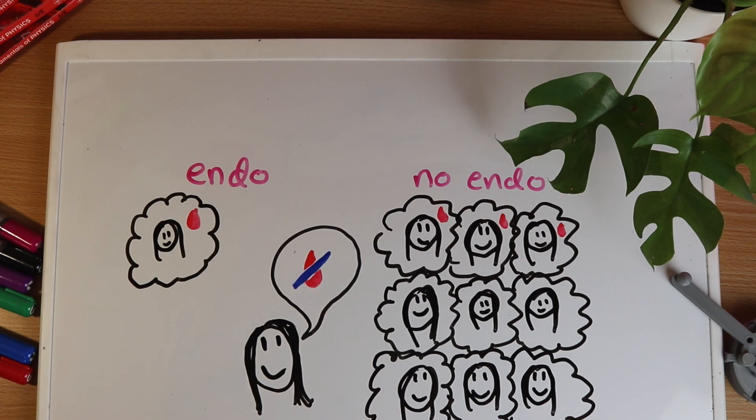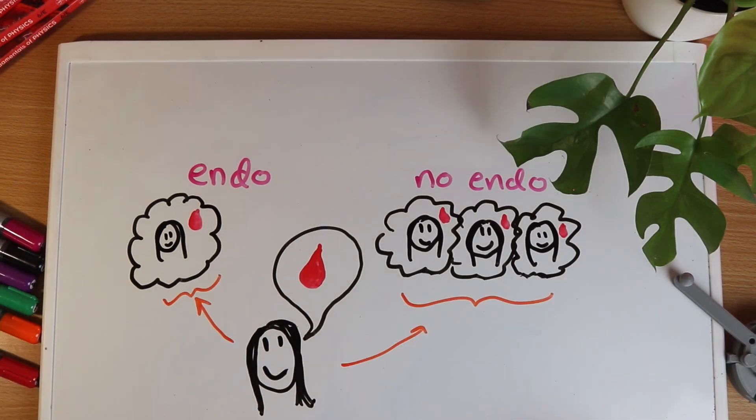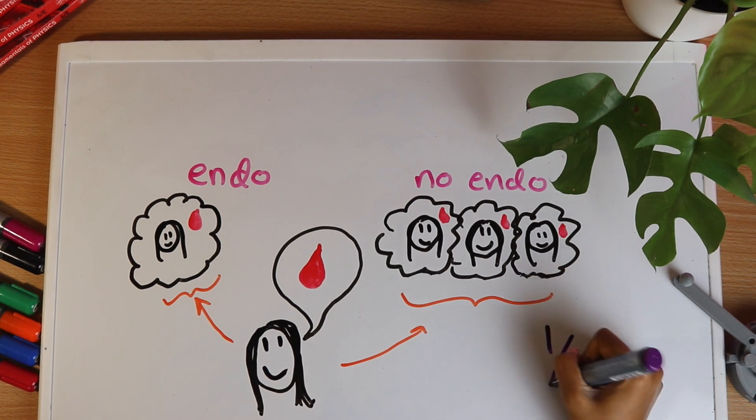If someone instead says that they do have this symptom then they must be one of these four people. So what's the chance that they have endo now? The chance is one out of four. So by knowing this one symptom we were able to increase a person's chance of having endo from one in ten to one in four. Remember this is probably an underestimate because I overestimated how common bad period pain is for healthy people.